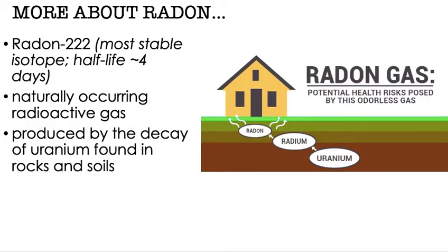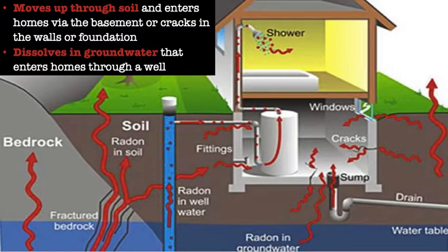Radon-222 is the most stable isotope, with a half-life of approximately four days. It's a naturally occurring radioactive gas produced by the decay of uranium found in rocks and soil — typically way down under the ground. As it breaks down, we get radium and eventually radon, and as that radon is a gas it can enter our homes and pose some risks. It typically moves up through the soil and enters homes via the basement, so in the Midwest, for example, they test homes a lot — particularly because they have basements.